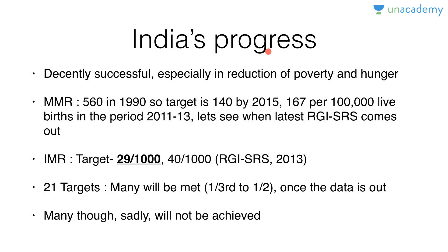India's progress was mixed. We achieved roughly half of the targets — decently successful, not very bad, not very good. Especially in reduction of poverty and hunger we did extremely well. For MMR, it was 560 in 1990, the target is 140, and according to the Health Ministry of India we are at 167 per 1 lakh live births — from the RGI Sample Registration System 2013 report. We are still awaiting the 2015 report but may achieve this goal. For IMR, the target is 29 per 1000 — we will slightly miss this as the 2013 IMR was 40 per 1000. Do not confuse it with neonatal mortality rate which is 28 in India's case — neonate means up to 28 days, infant means up to one year of birth. Approximately 7 to 13 of the 21 targets will be met once the data is out.